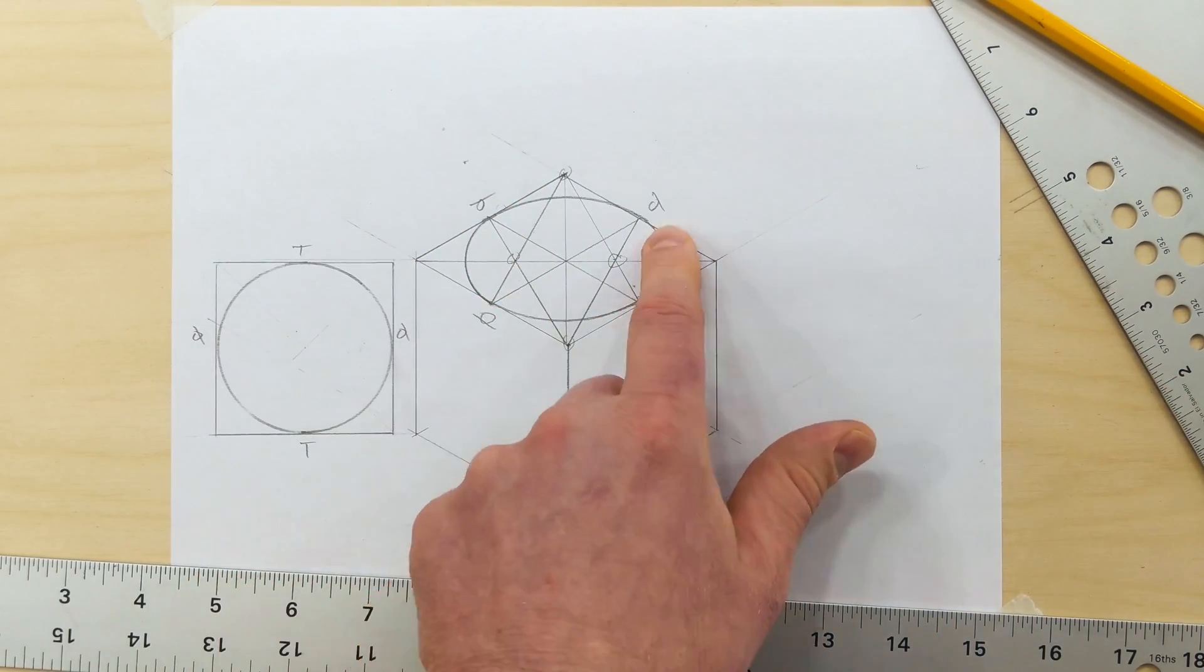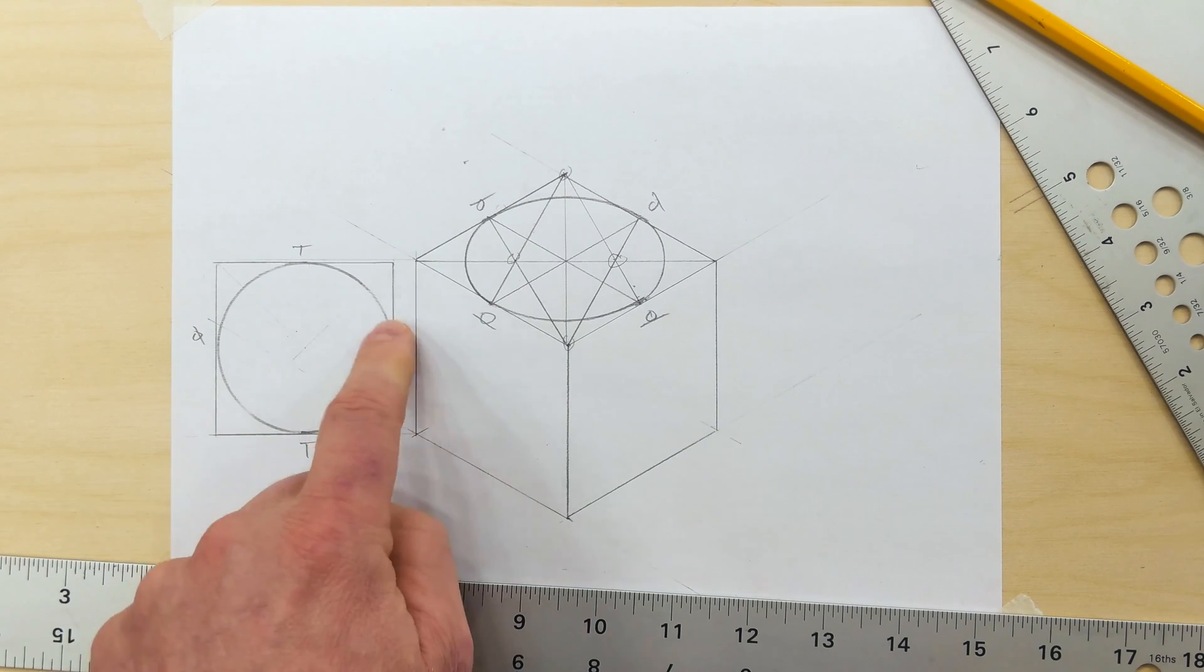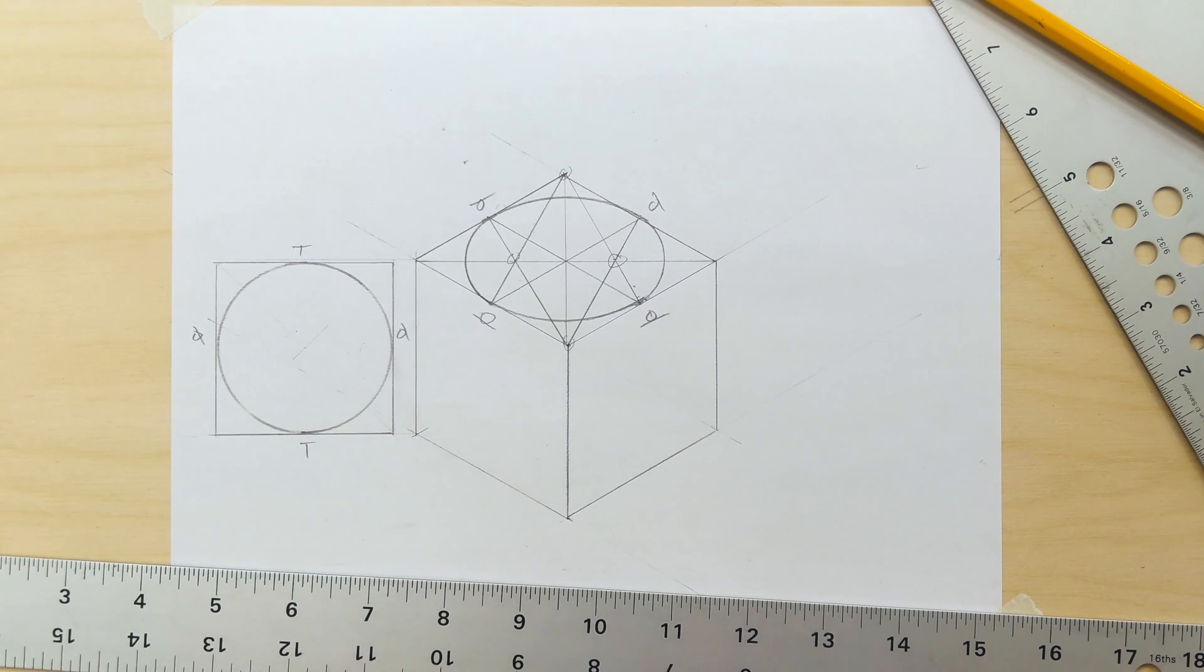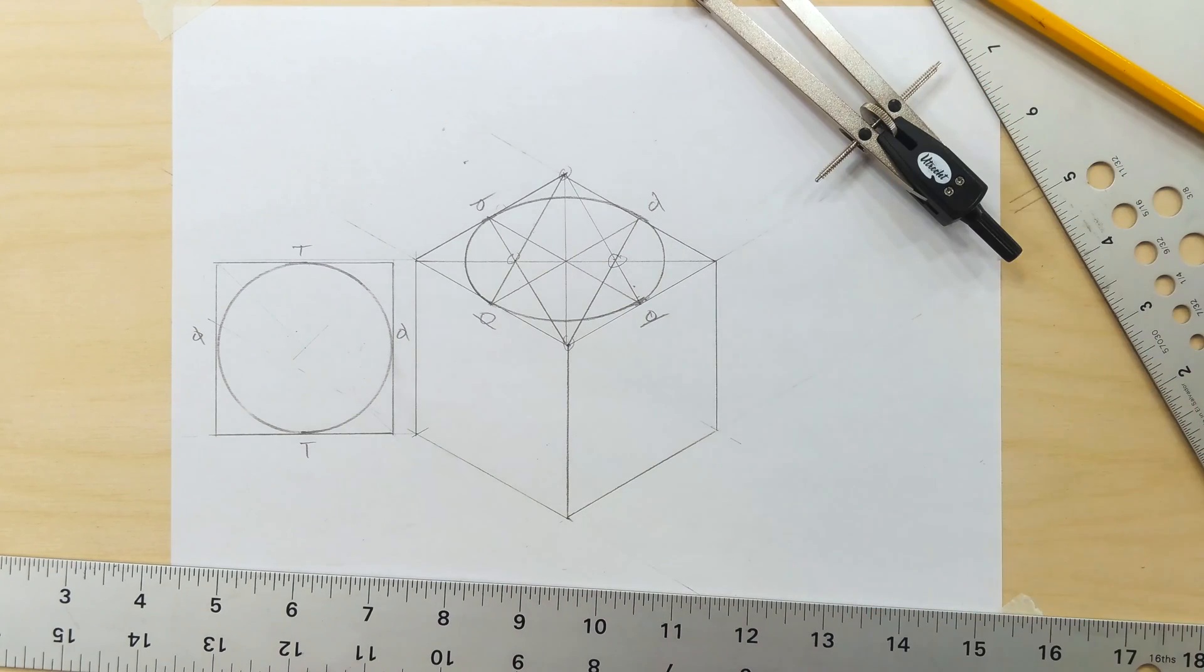You can see it's tangent on those four points just like it would be over here. Go ahead and draw isometric circles on the other two sides of your isometric cube.